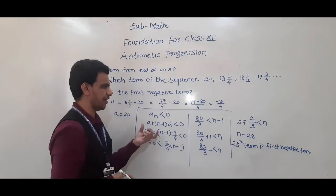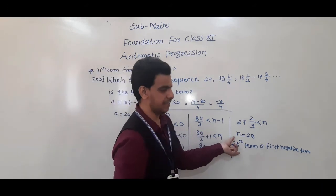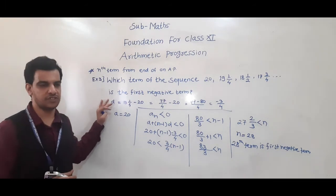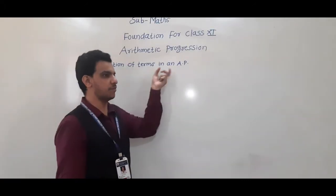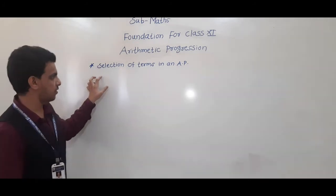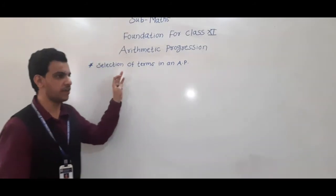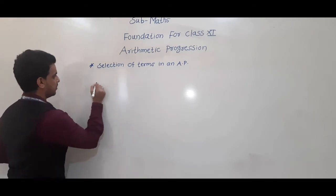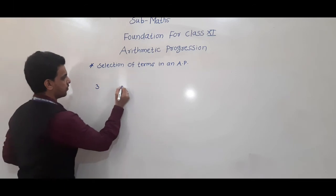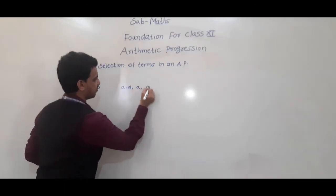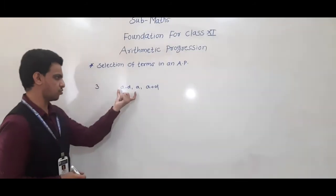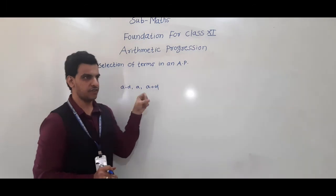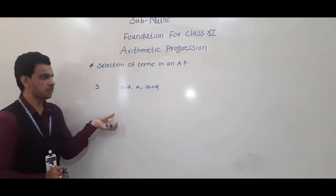Now we discuss the next point: selection of terms in an AP. Sometimes we require a certain number of terms in AP. Then we use a convenient selection of terms. If we require 3 terms in an AP, we use a − d, a, a + d. If we add these, minus d and plus d cancel, giving us the value of A directly.